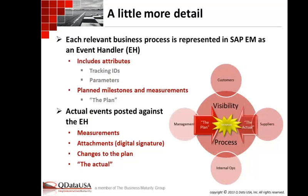Each relevant business process is represented in EM by an event handler. With that event handler, we store attributes against it — attributes that describe that event handler. An event handler could be, for example, a sales order line item. Attributes would include the material number, quantity, date created, the customer — all the information needed to describe that particular line item. Tracking IDs come along with that. Tracking IDs are values distributed to that line item that we post events against — for example, in a sales order line item, the tracking ID would be the sales order number, or the sales order plus line item number if we need an event posted at the line item level.